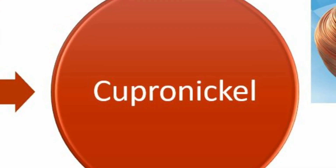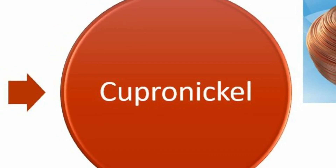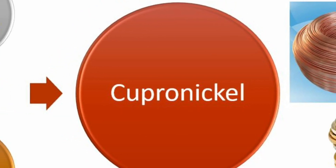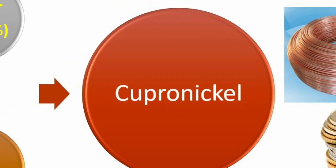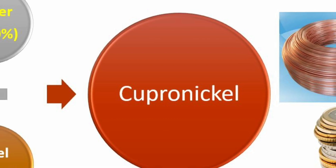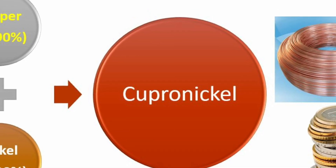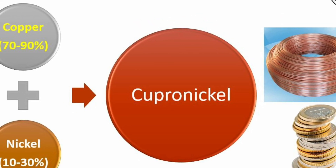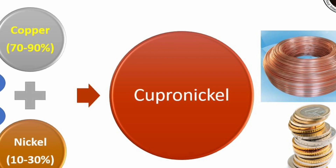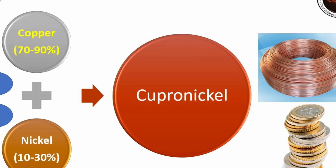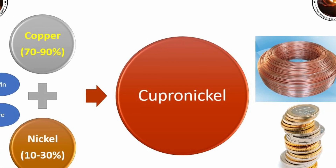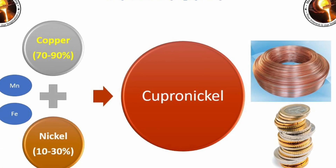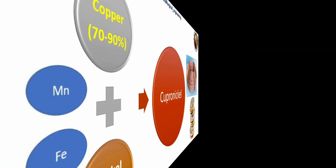Next is cupronickel. It is a copper-based alloy and nickel is the main alloying element. Other alloying elements are manganese and iron. The composition of cupronickel is 70 to 90 percent copper and 10 to 30 percent nickel. It is used in coinage and marine engineering.